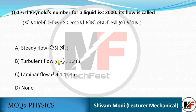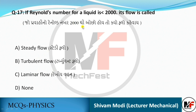If Reynolds number for a liquid is less than 2000, its flow is called laminar flow. Between 2000 and 3000 it is called transition flow, and if Reynolds number exceeds 3000, it is called turbulent flow. Here, since we are discussing less than 2000, the answer is laminar flow.